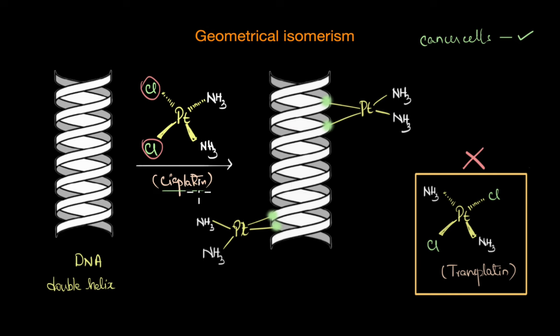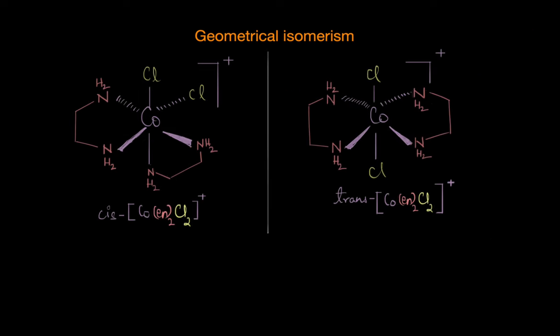And this difference in the behavior of the cis and trans isomers is not just limited to medicine alone. Even in catalysis and in synthetic chemistry, the cis and the trans forms of a coordination compound can make a world of difference. For example, let's take a look at the cis and trans forms of the coordination complex given here.